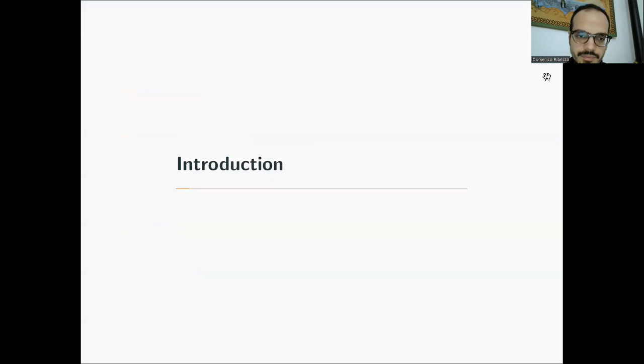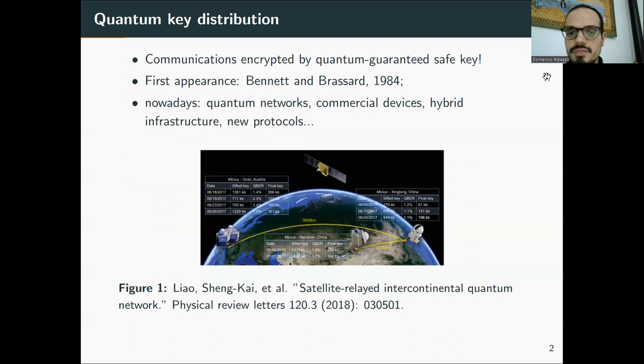Quantum key distribution was invented in 1984 by Bennett and Brassard and is a method that makes two parts, generally known as Alice and Bob, able to exchange a key that then they would use for encrypting their private communications. The peculiarity of this method is that the key that they exchange is 100% safe and this is guaranteed by quantum mechanics laws.